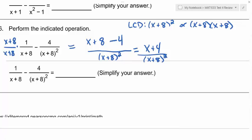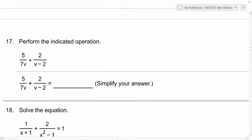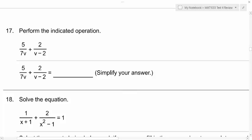I think there's one more of these. Yes. What would your LCD be here? V minus 2. Would it be a 7v and a v minus 2? Exactly. You have to include all of it. Very good. So what is the first fraction missing that it needs to have in the denominator? A v minus 2. And then what is the second fraction missing that it needs in the denominator? 7v. Good.